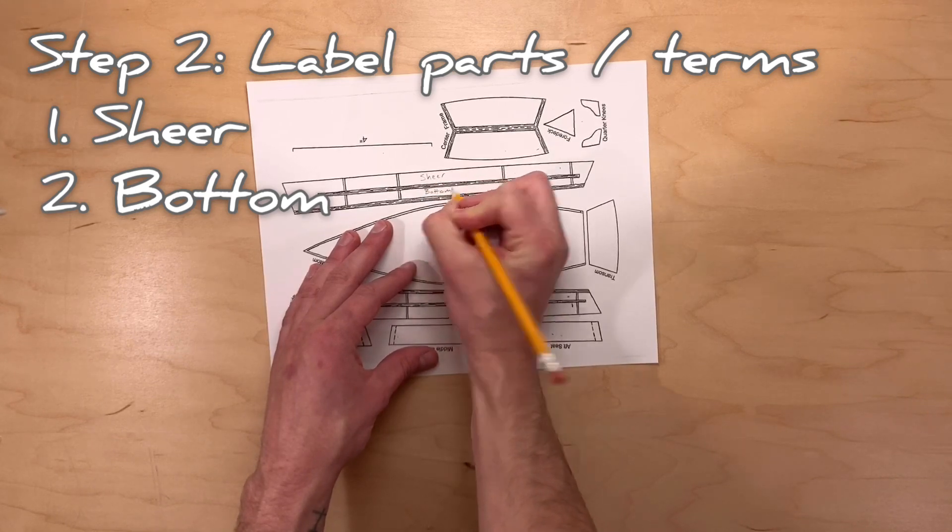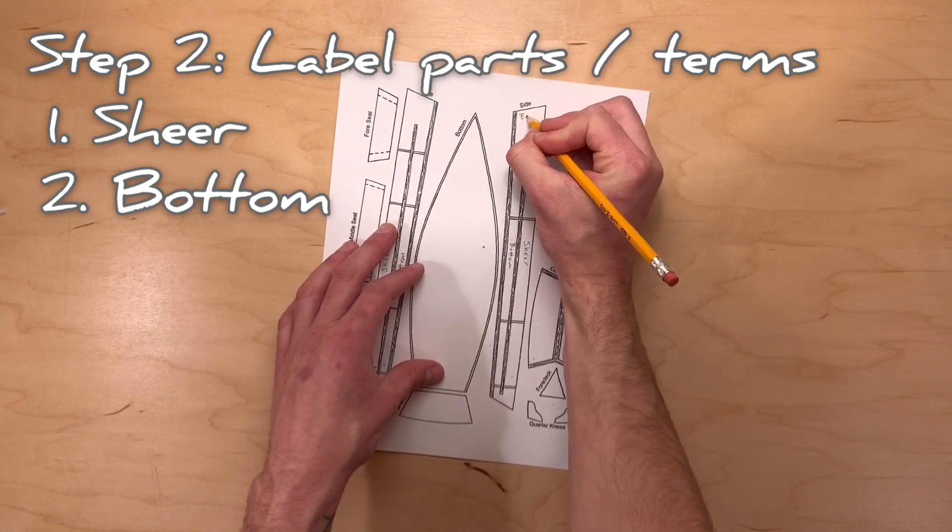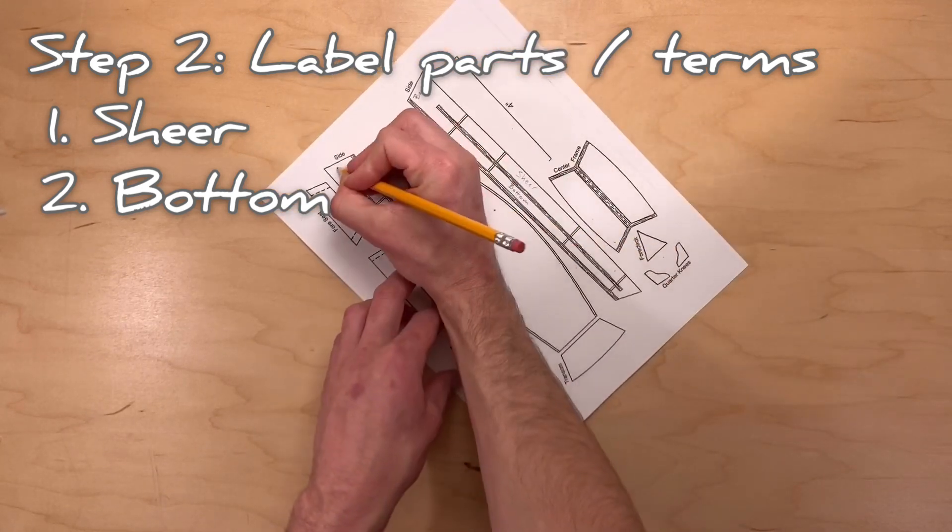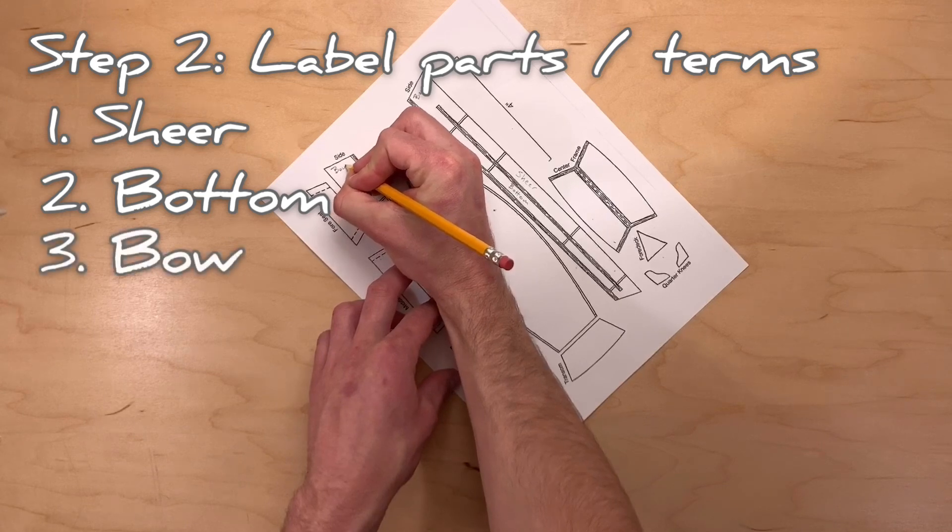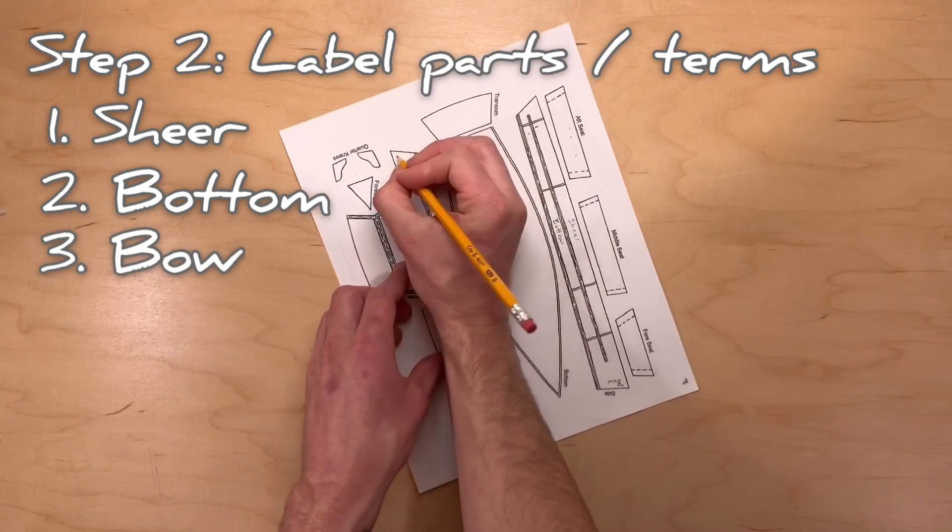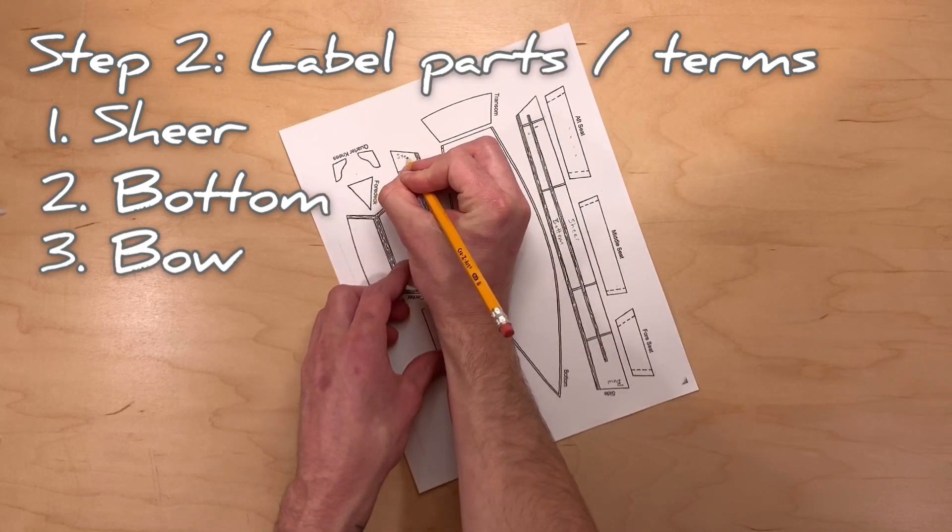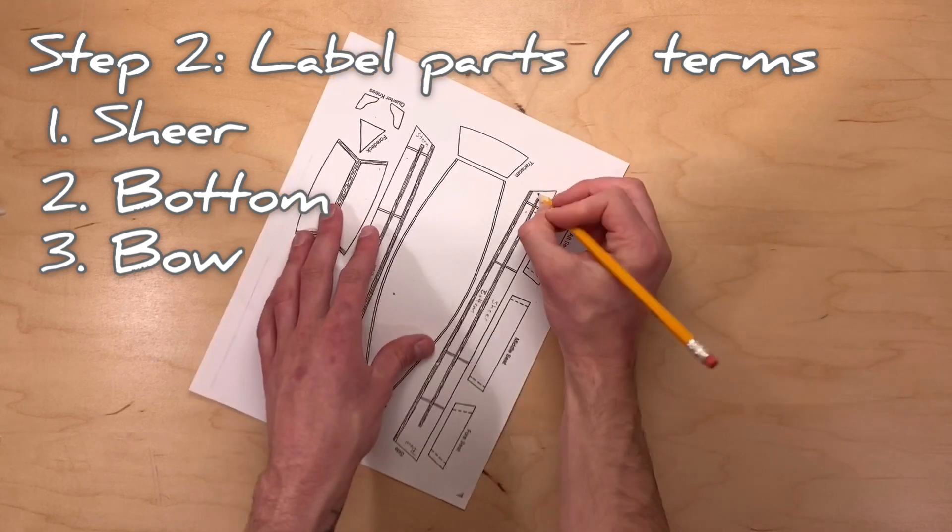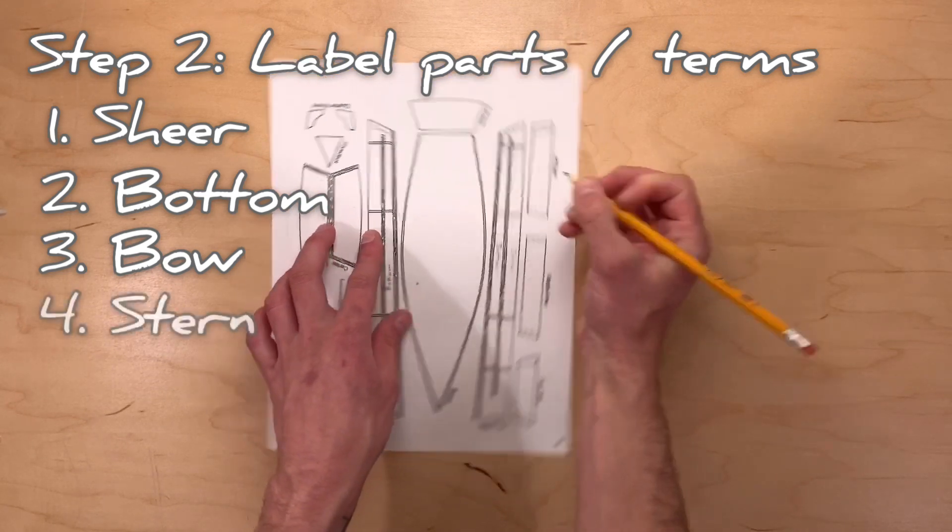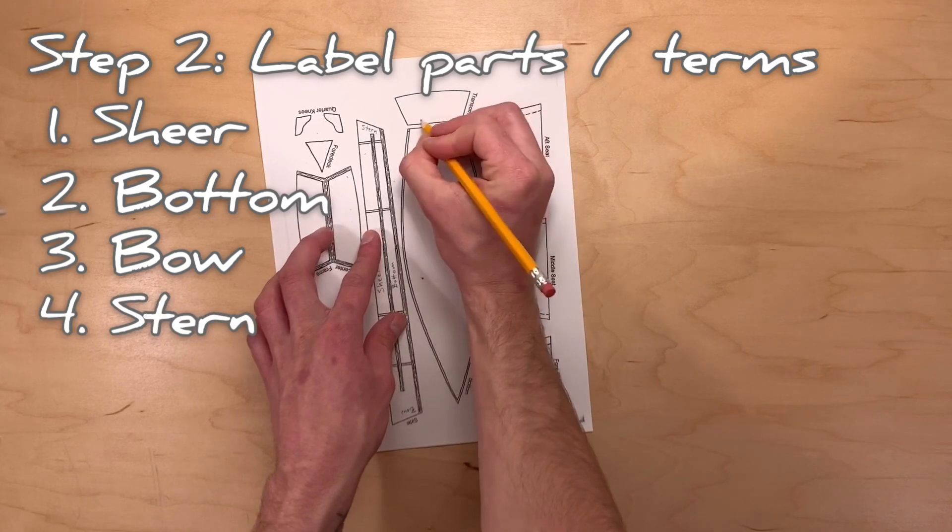The next boat terms you may have heard of before. We want to label the part of the side that goes in the front of the boat with the word bow. The bow is simply the front of the boat. Next, we label the aft or the back part of the side with the word stern. You'll hear us use the word bow and stern frequently throughout our videos.